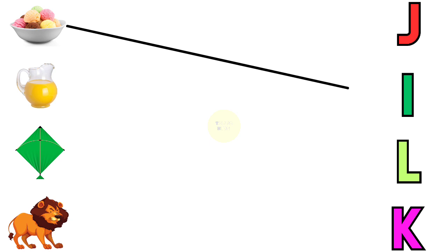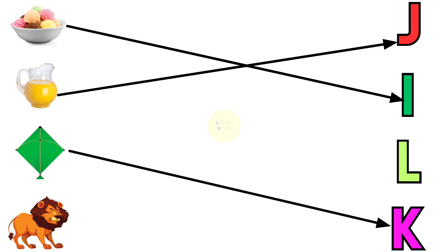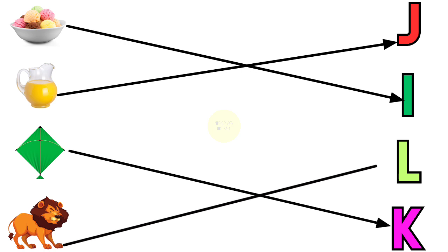I for Ice Cream, J for Jug, K for Kite, L for Lion.